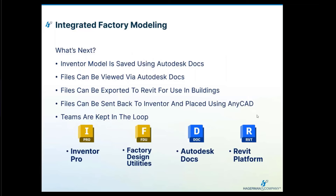So what's next? We've looked at how the Inventor model is saved and viewed using Autodesk Docs, how files can be exported to Revit for use in buildings on the architecture or BIM side, and how they can be sent back to Inventor using AnyCAD. All teams are kept in the loop using Inventor, factory design utilities, Autodesk Docs, and Revit. Thank you.